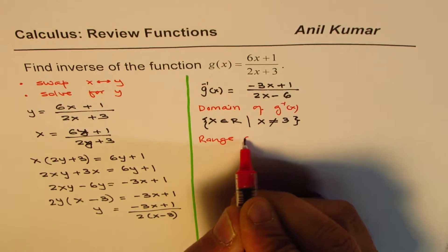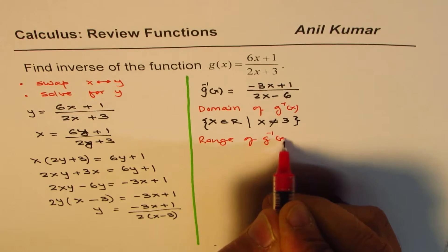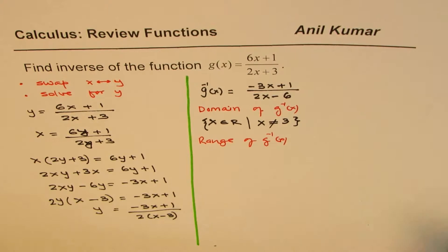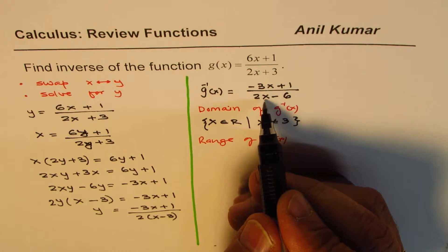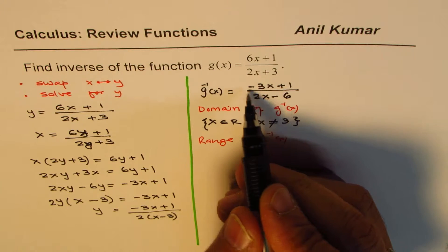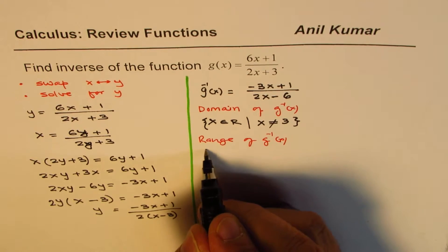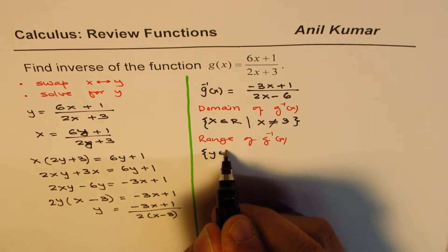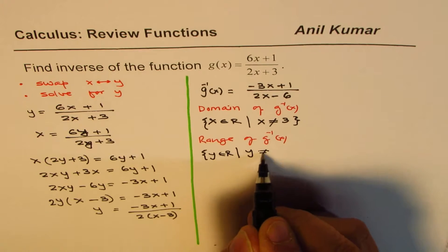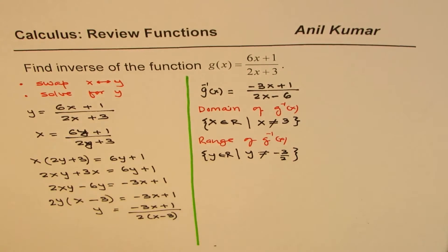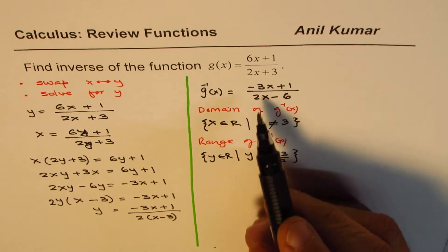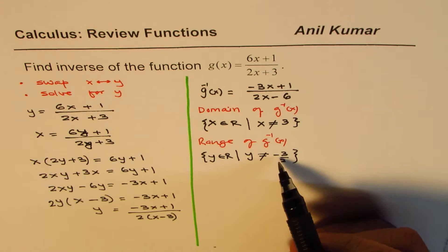As for the range of g⁻¹(x), since the degrees of numerator and denominator are the same, there will be a horizontal asymptote at −3/2. So y belongs to real numbers and y is not equal to −3/2. That is the range for this inverse function.